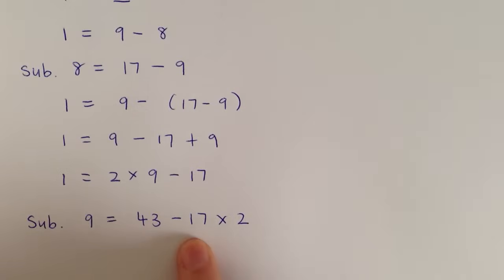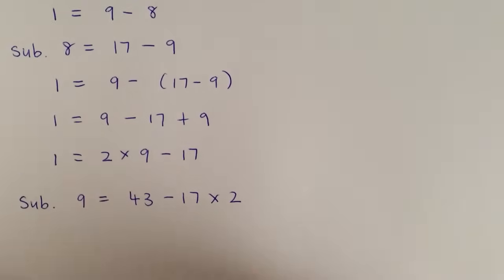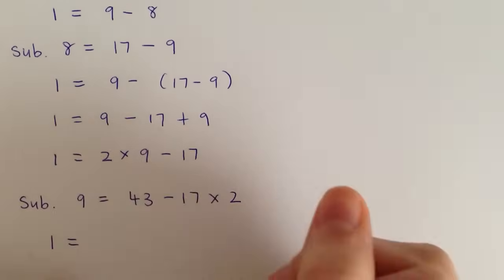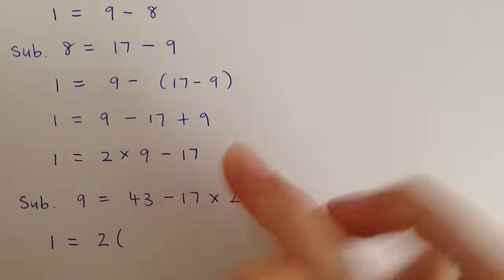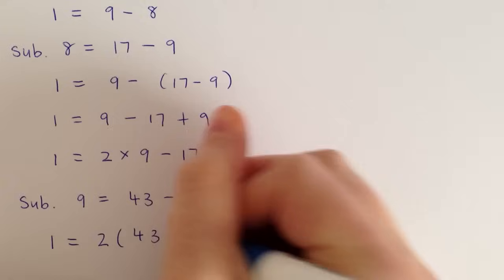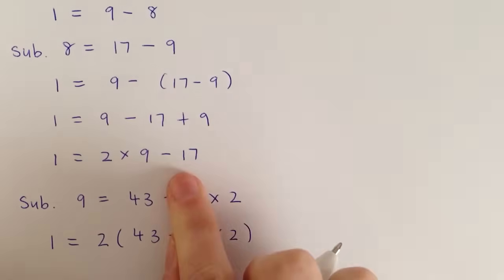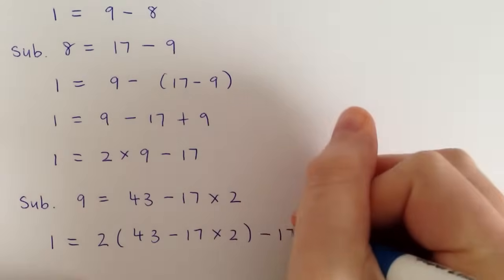Now we want to sub this one into the one before it. So that makes 1 equals 2 times, instead of a 9, we want to write this equation here. And then don't forget this minus 17 as well.